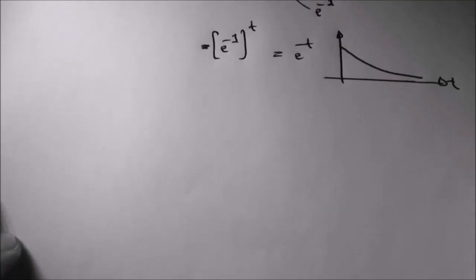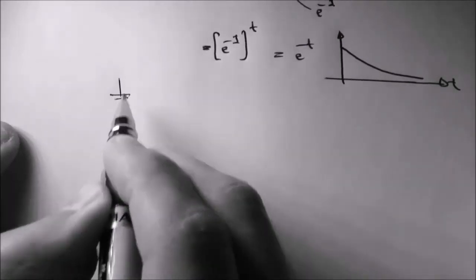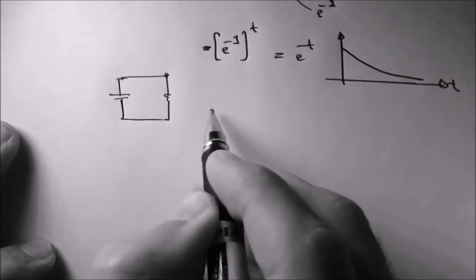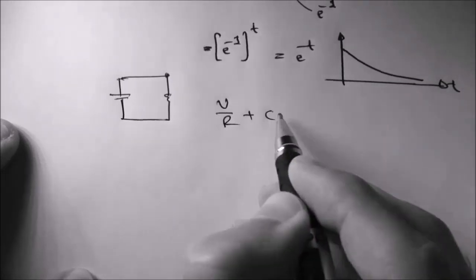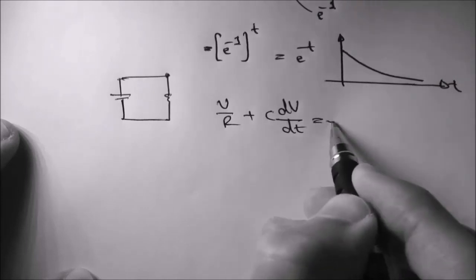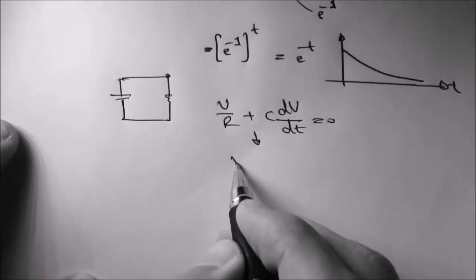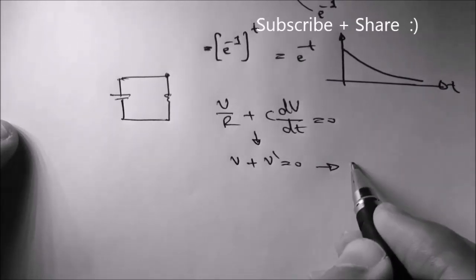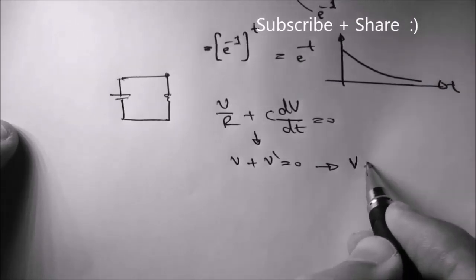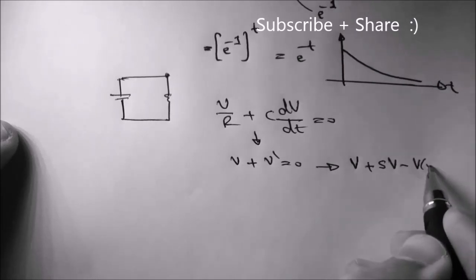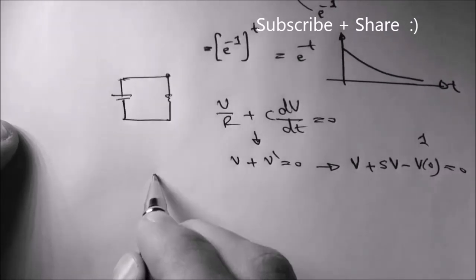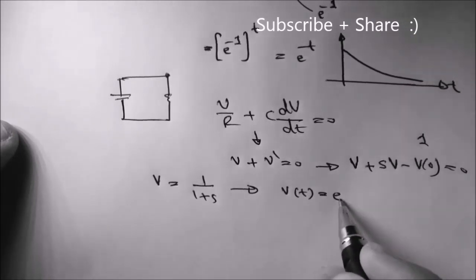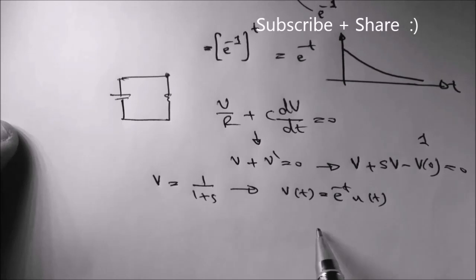I'm finishing this by telling you how engineers solve this problem. They write the current equation at a node: V over R plus C·dV/dt equals 0. So this means V plus V' equals 0. Taking the Laplace transform we get V(s) plus s·V(s) minus the initial condition V(0), which is 1 volt, equals 0. So V(s) equals 1 over (1 plus s). Taking the inverse Laplace transform, V(t) equals e to the minus t.